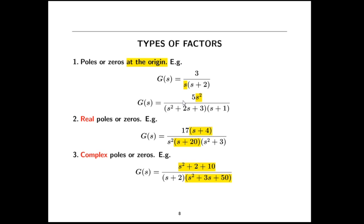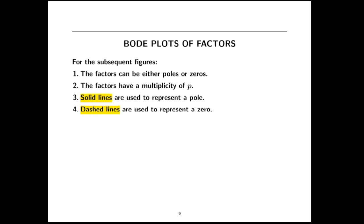Here are the types of factors. Poles or zeros at the origin — one pole at the origin, or two zeros at the origin. Real poles and zeros — here's a real zero and here's a real pole. Complex poles or zeros — there's a complex zero pair and a complex pole pair. The notation I'll use is solid lines for poles and dashed lines for zeros, and P for the multiplicity.